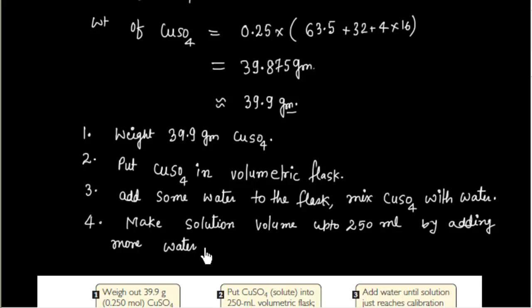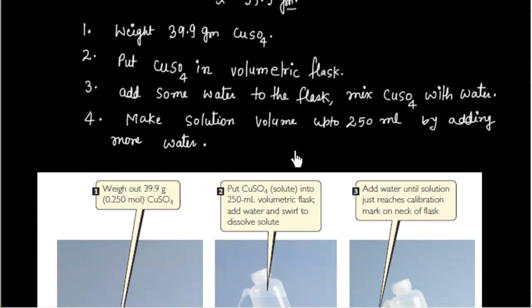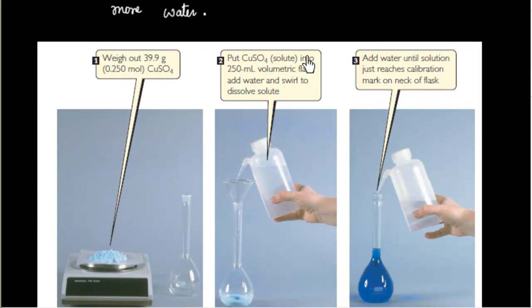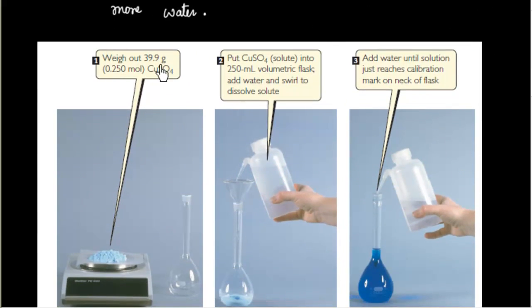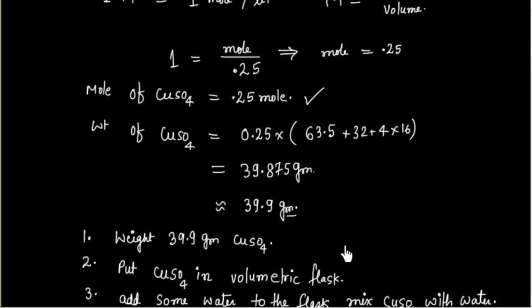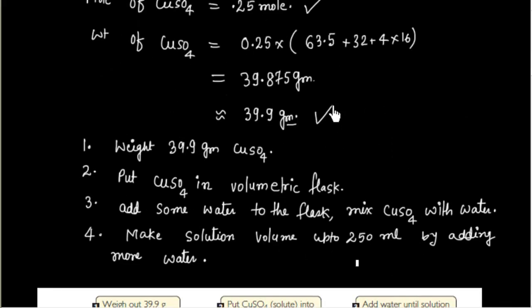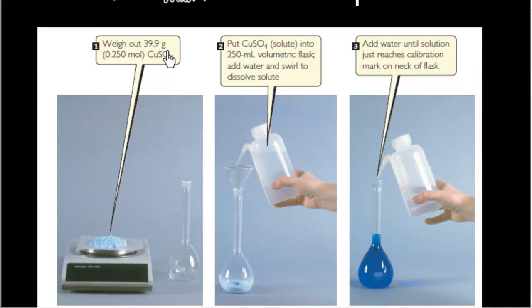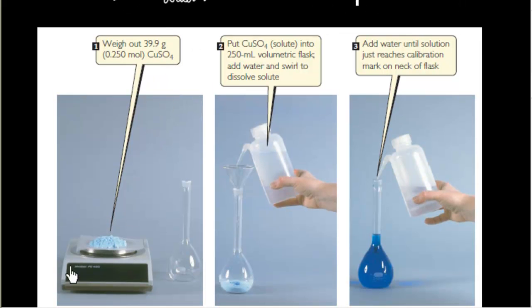So these are the steps that we have to follow. So you see we can depict this diagram here. So first task is we have to weigh 39.9 gram of CuSO4 and that is 0.25 moles. So you see this is the mole of CuSO4 and this is the weight of CuSO4. So we have to weigh 39.9 gram of CuSO4.